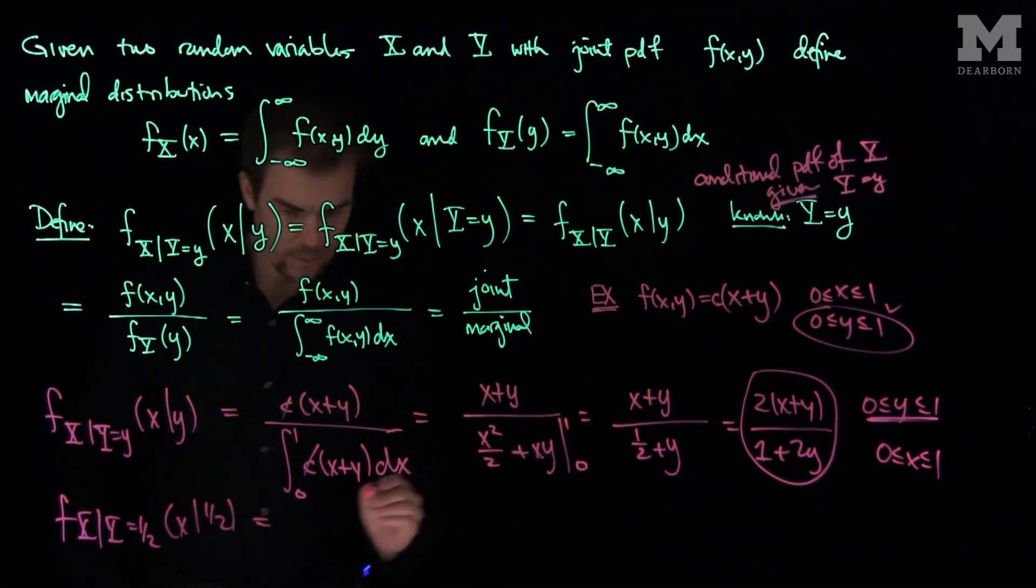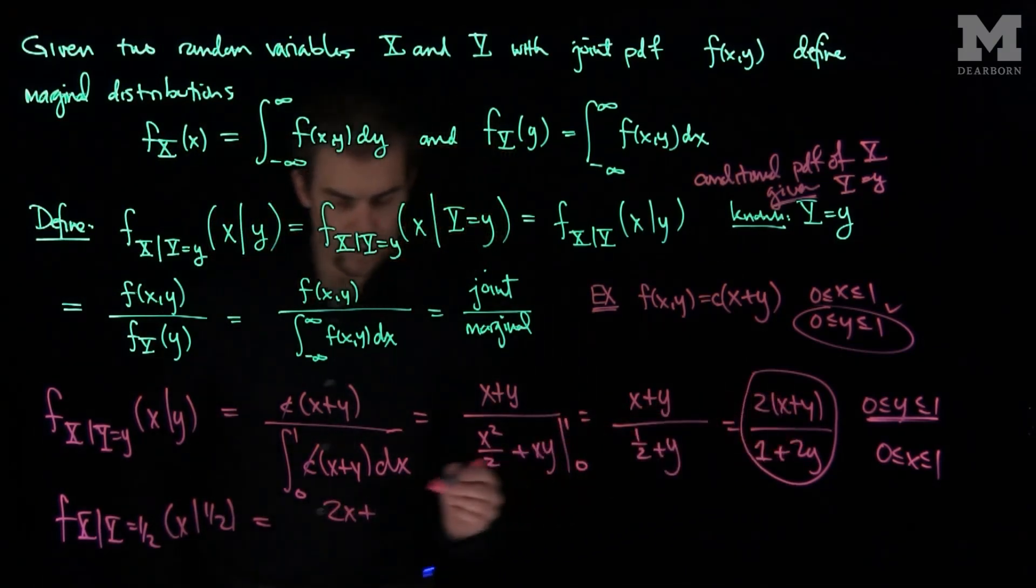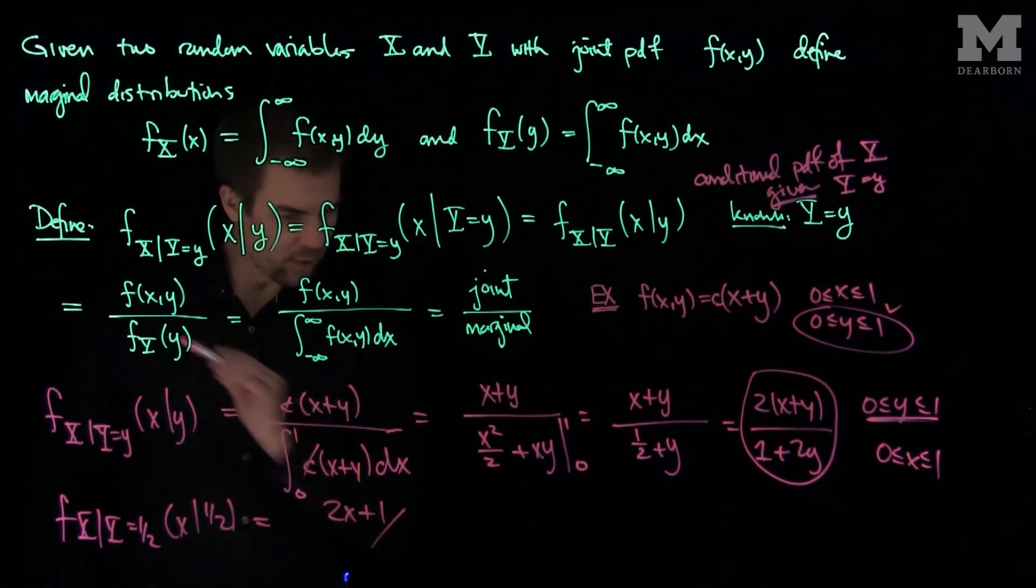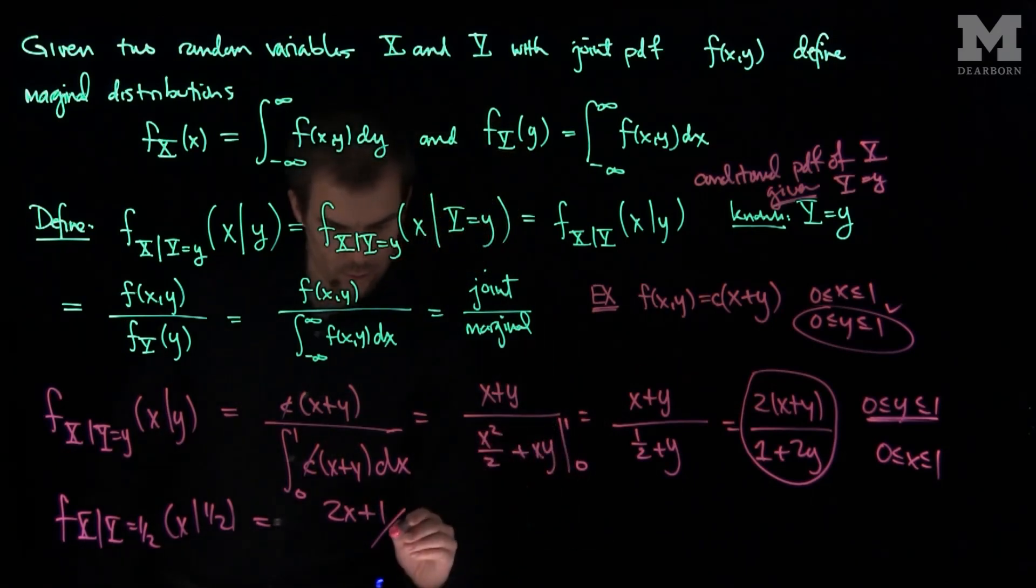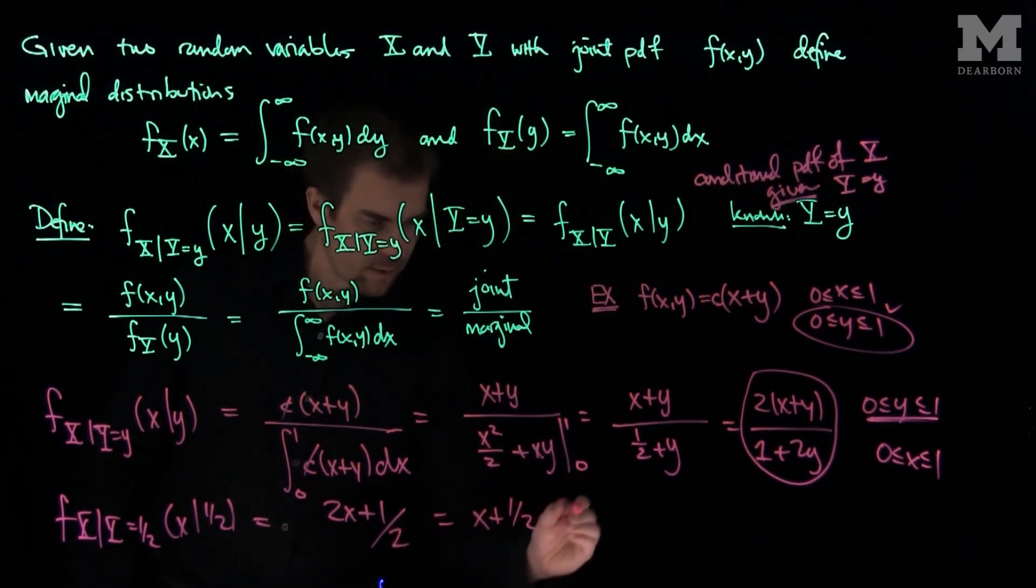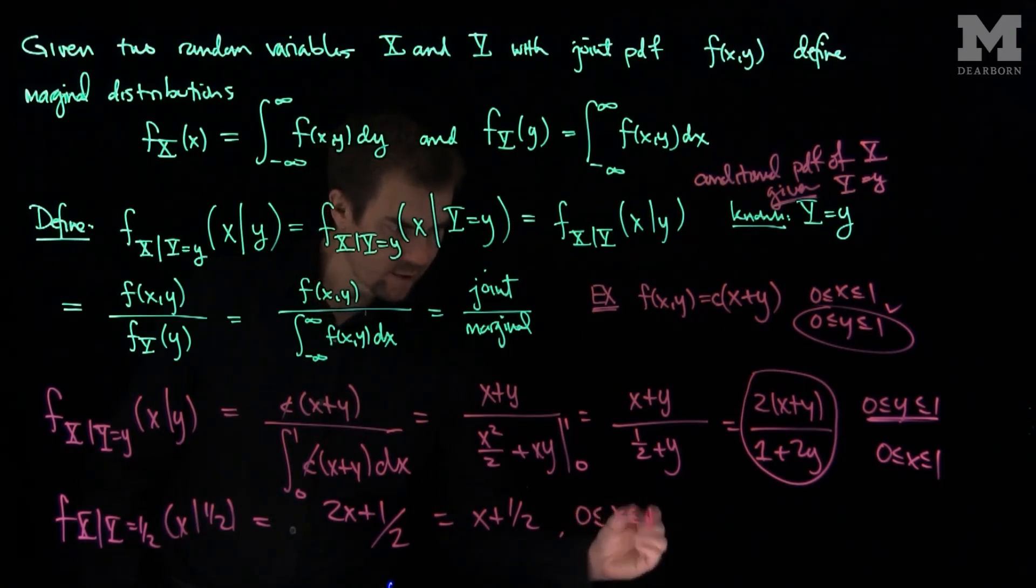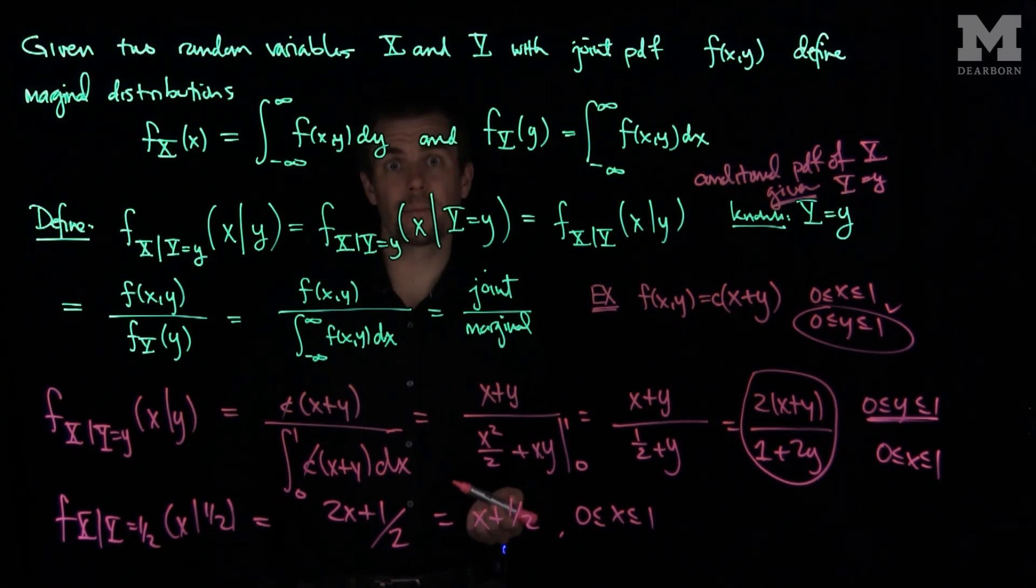f(x|1/2) would be equal to 2x plus, if y is a half, 2 times one-half is going to be 1, over, if y is equal to one-half, this becomes 1 plus 1, or 2. So we'll have (x+1/2) for x between 0 and 1. And you can check that (x+1/2) is indeed a valid PDF for x between 0 and 1.